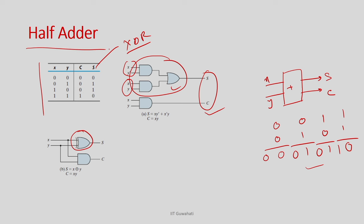So instead of AND and OR gates, we use one XOR for the sum. This is the half adder: it has only 2 single-bit inputs; the output is sum and carry. Effectively, one XOR gives the sum and one AND gate gives the carry. This is our half adder, but our objective is to develop an n-bit adder.